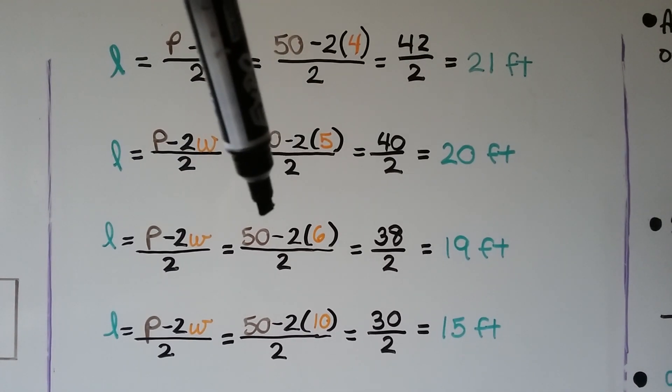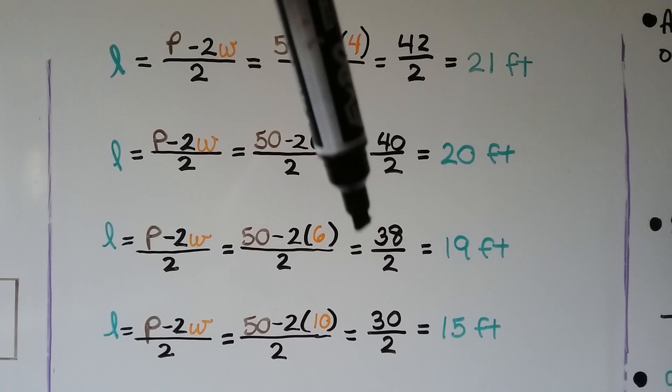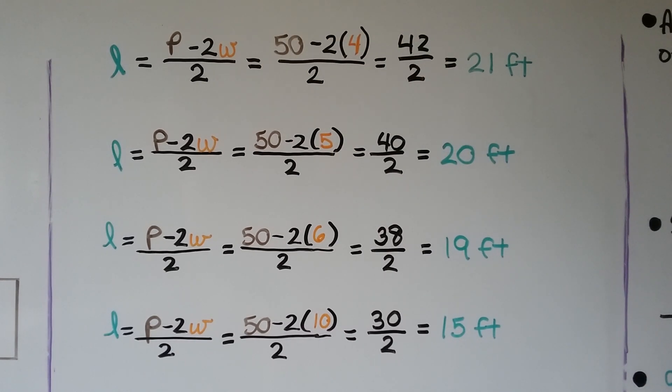If the width is 6, then we end up with 38 divided by 2, which is 19 feet for the length.